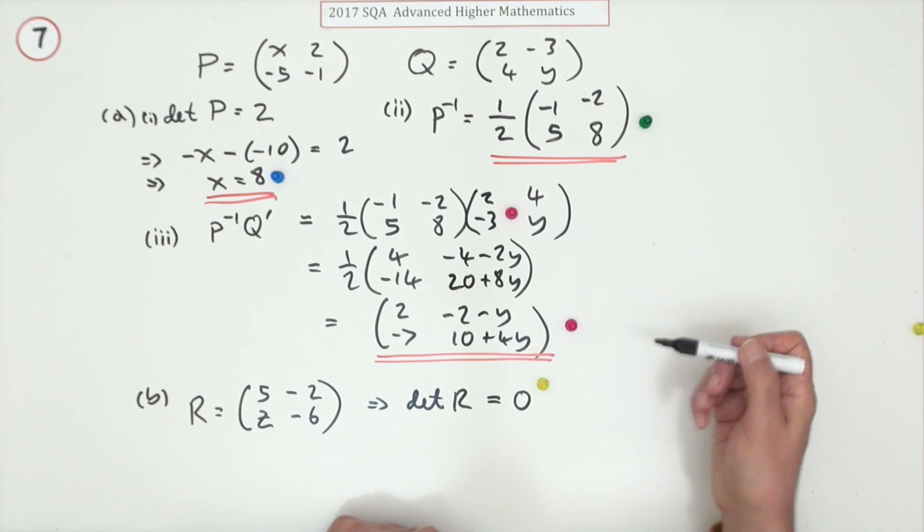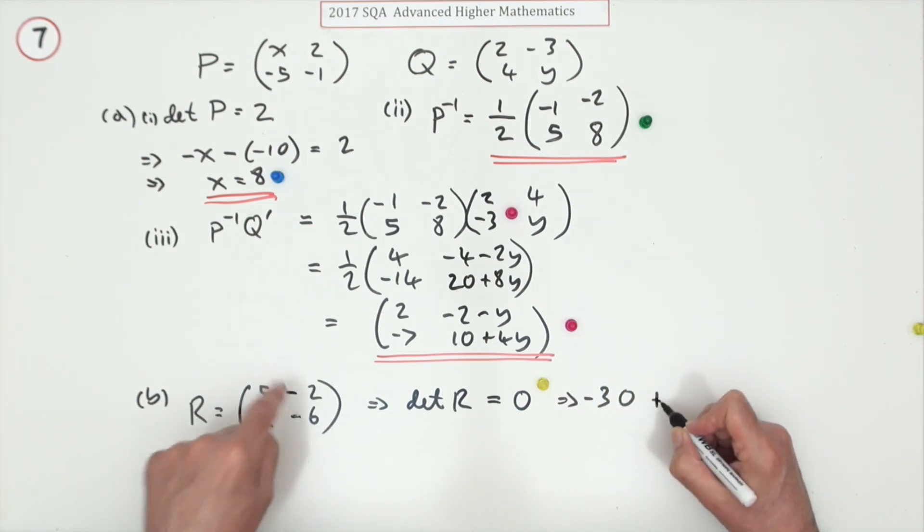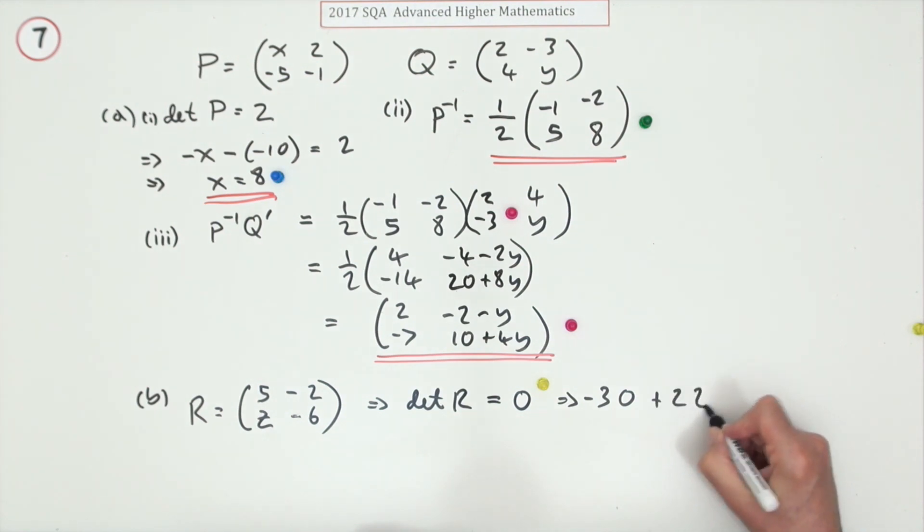But here you're simply going to say the product of the main diagonal, which is negative 30, minus the product of the other diagonal, so that will be plus because I'm taking away a negative 2z, should equal zero. So 2z is 30, so z is 15 for that mark.